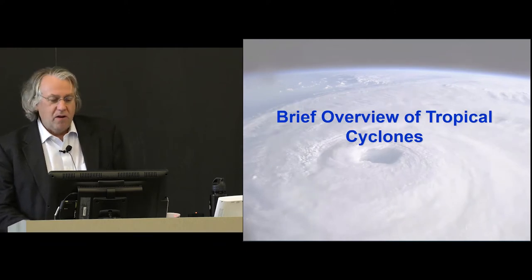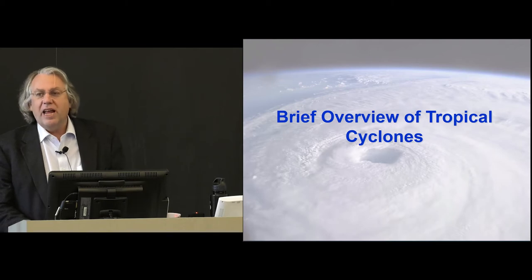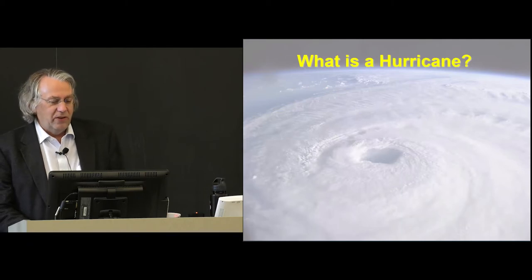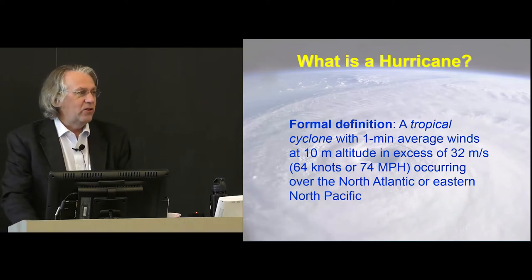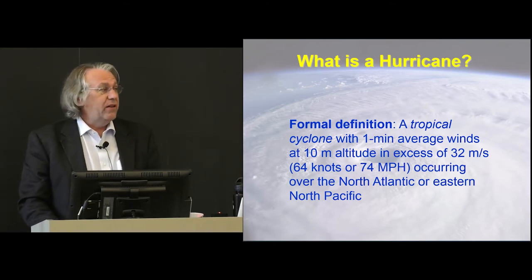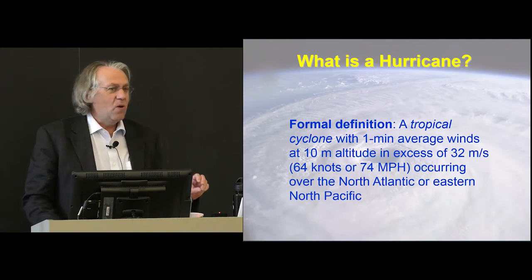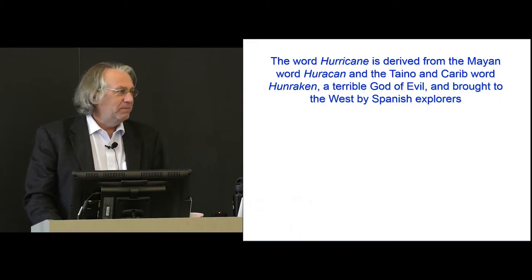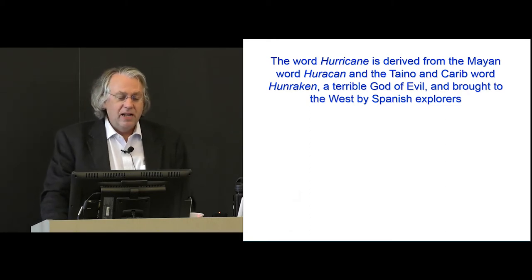So let's begin with just a quick overview of storms. Now, here I'm introducing a term that might be new to you, tropical cyclones. This is the generic name for this phenomenon, no matter where it occurs in the world. And I'll show you a map in a minute of where they occur. And yet, in this part of the world, we tend to refer to them as hurricanes. So what is a hurricane? If you look at a meteorological glossary, you'll see that it is defined as a tropical cyclone with winds in excess of about 74 miles per hour occurring over the North Atlantic or Eastern North Pacific. So it's a strictly regional term for a generic phenomenon that we call tropical cyclones.